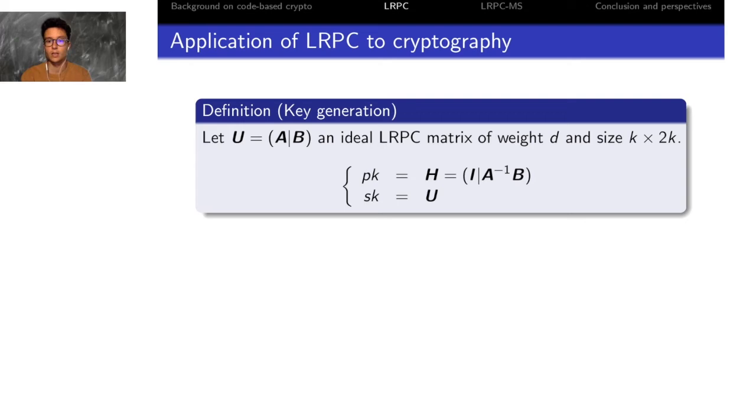Low rank parity check codes are really efficient for decoding and can be used in cryptography. I'm going to present the principles of LRPC cryptography which are used, for example, in ROLO, NIST candidate.